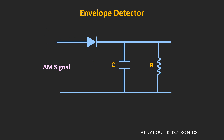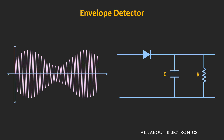During the forward bias condition, there will be no voltage drop across this diode, and in the reverse bias condition, it will act as an open circuit. When the AM signal is positive, the diode will conduct and act as a short circuit. During that time, the capacitor will get charged to the input voltage, and if we see the output across the capacitor, it will look like this.